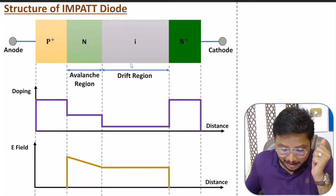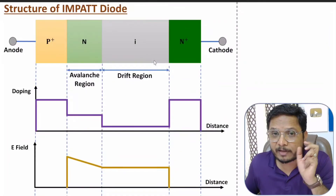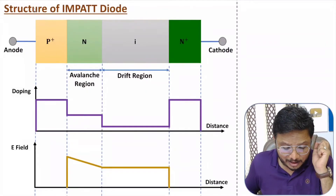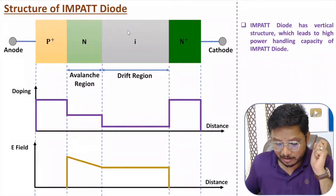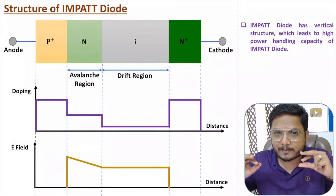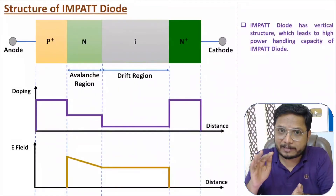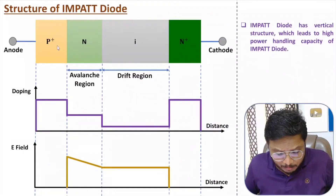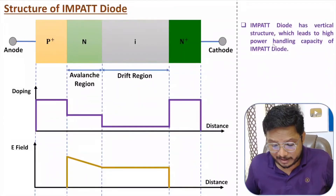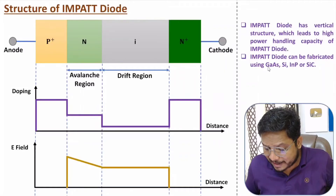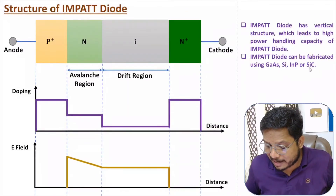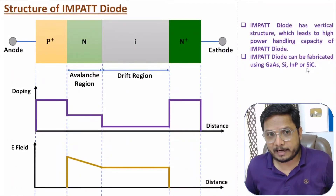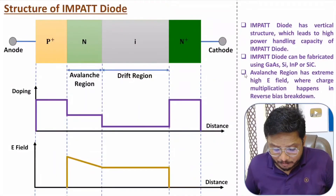Beyond the avalanche region is the drift region, where electrons drift toward the n+ side. This is a vertical structure because it has many layers, and more layers give higher power handling capacity. IMPATT diode can be fabricated using gallium arsenide, silicon, indium phosphide, and silicon carbide.